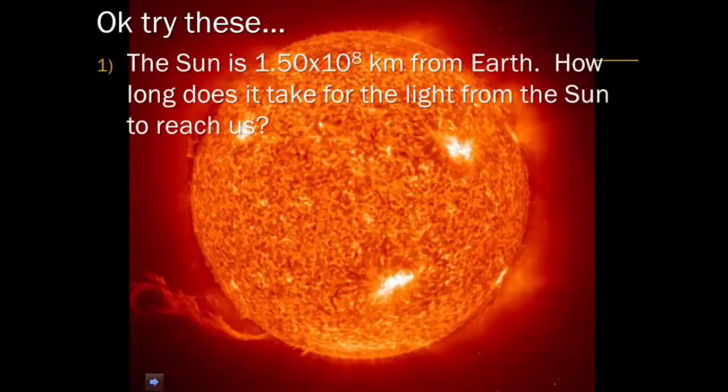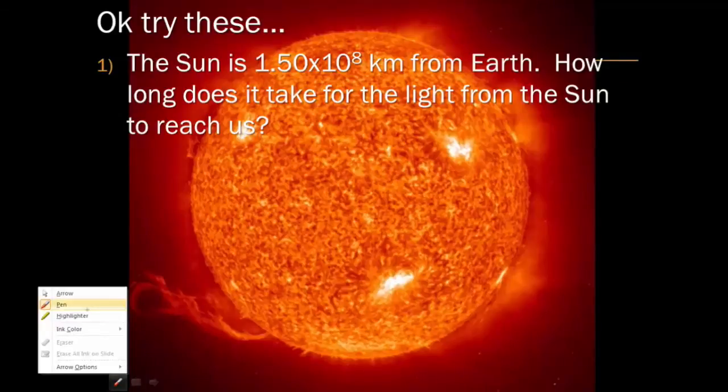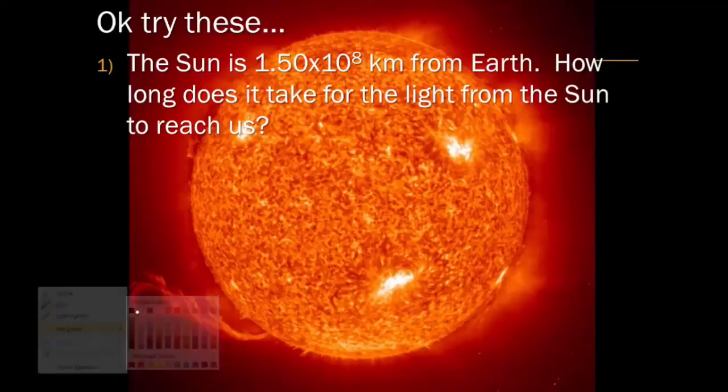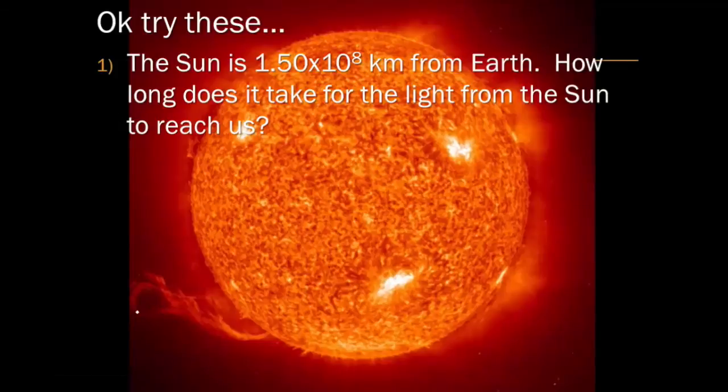Let's say that the Sun is 1.5 times 10 to the 8 kilometers from the Earth. How long does it take for light from the Sun to reach us? Now, most of us already know a ballpark answer in this case, but let's actually calculate this out. There is no acceleration, so we can use uniform motion. Velocity equals distance over time.